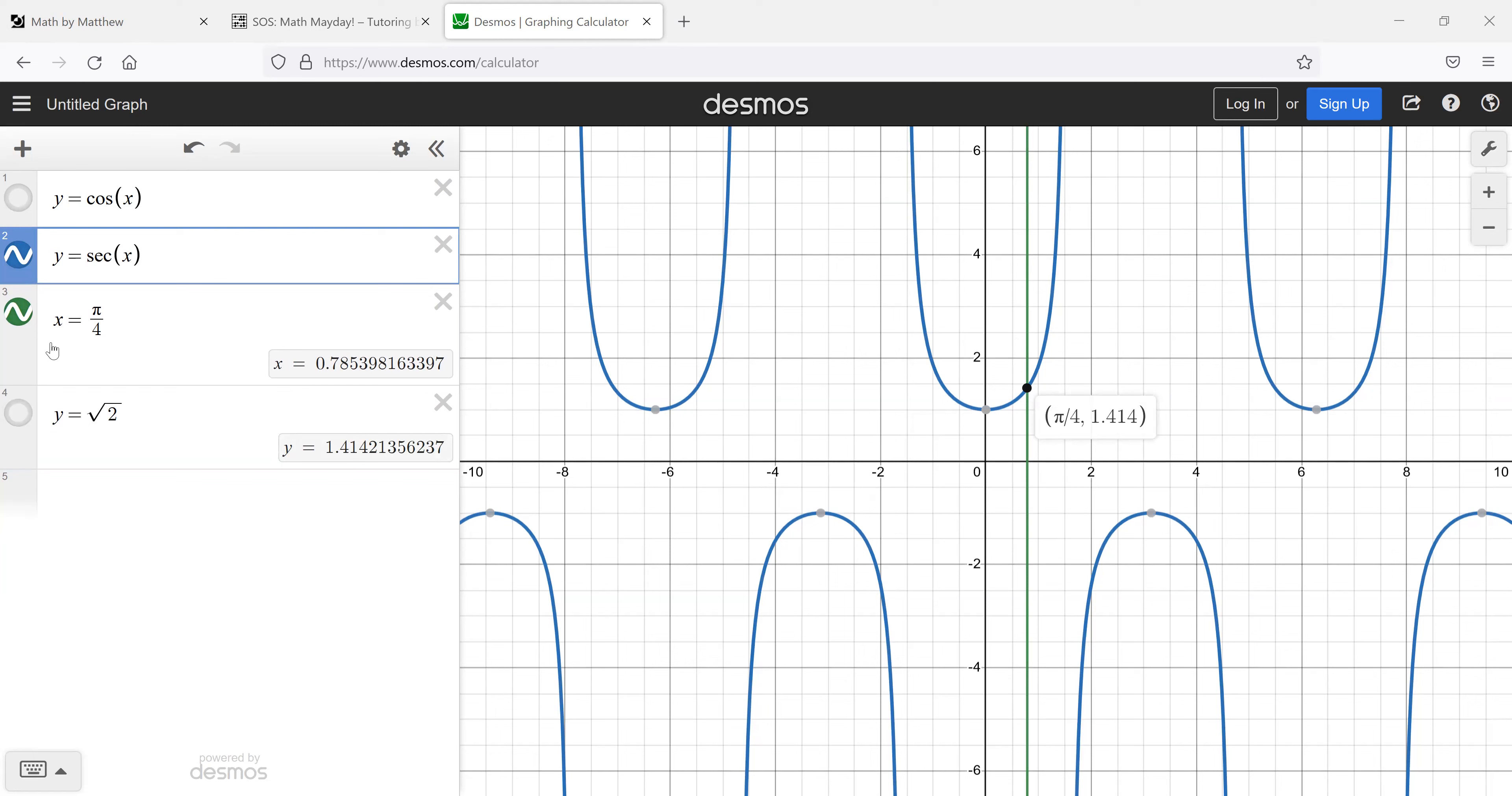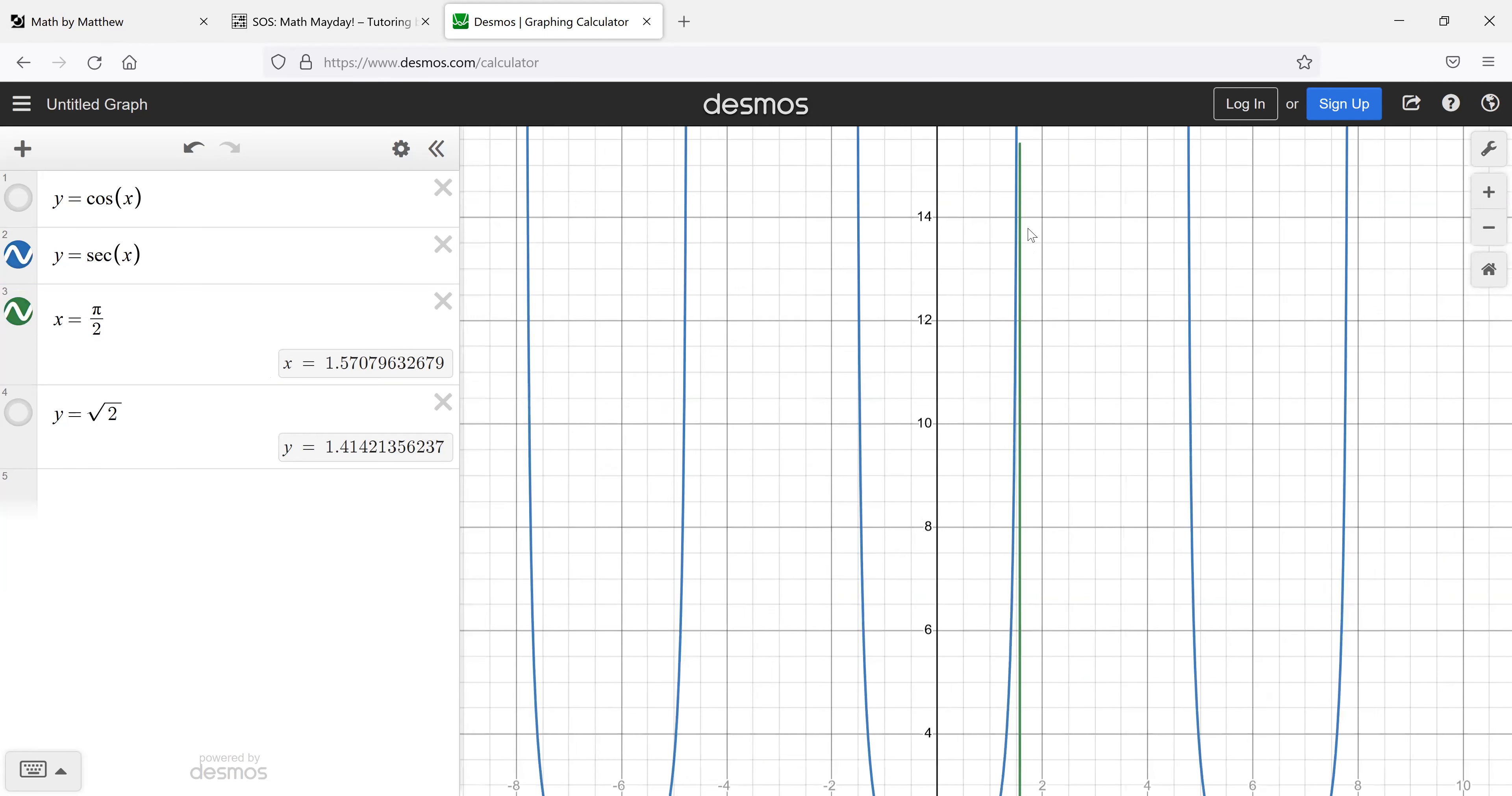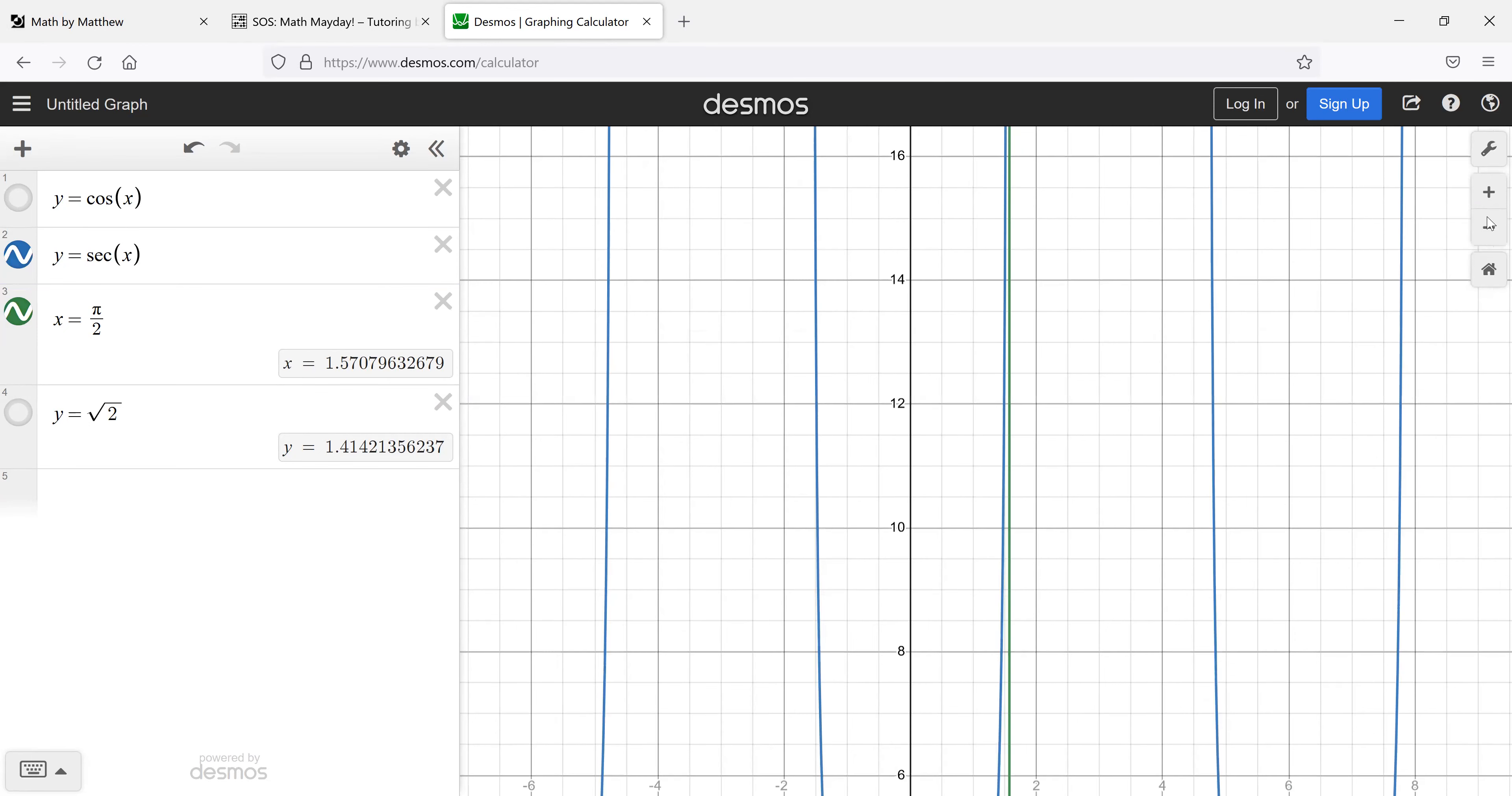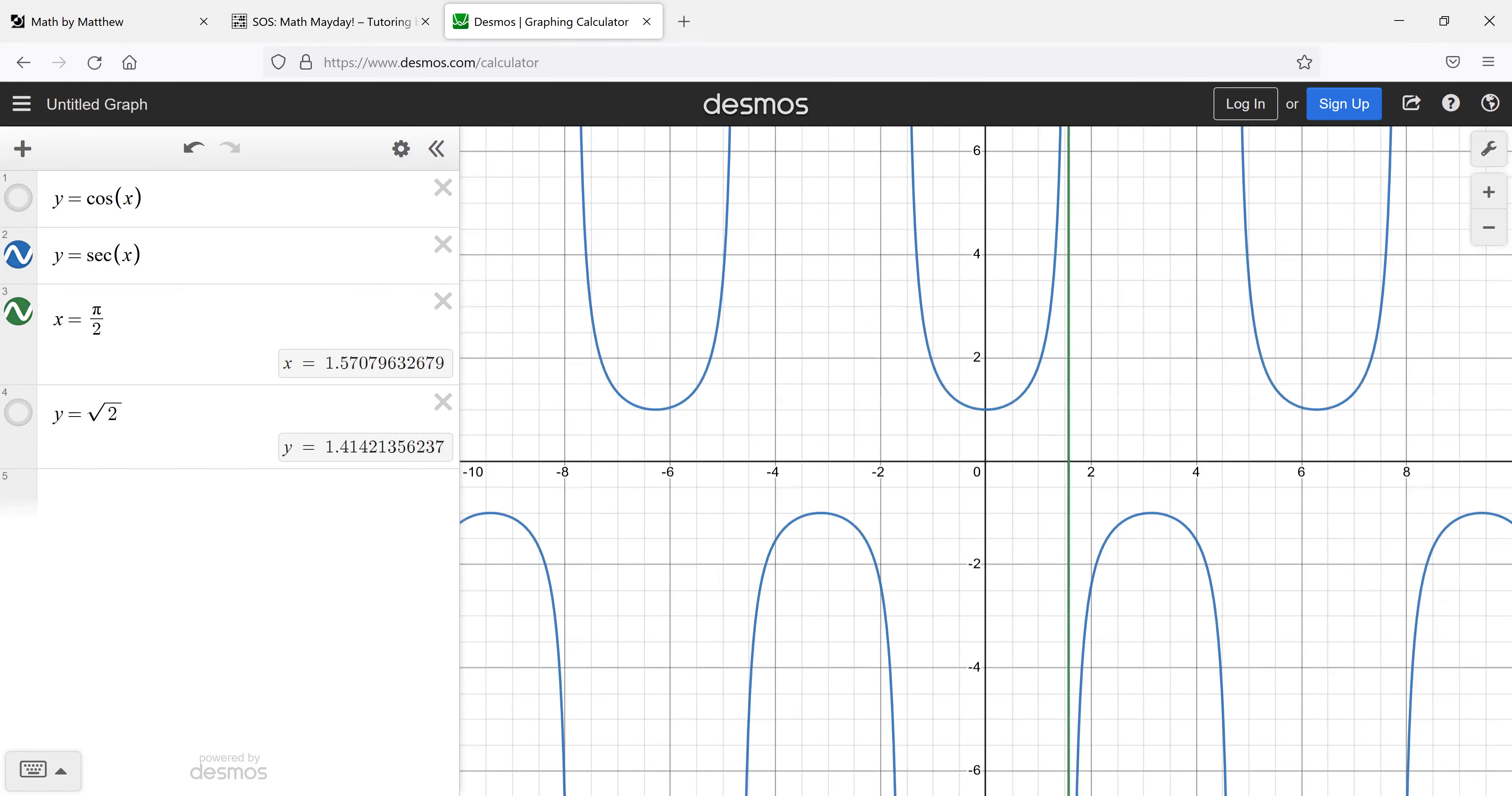But what's going on here at π over two? If we start zooming in, the blue looks like it approaches the green but never touches the green. So it does not exist. It does not exist. So you could say DNE, you can leave it empty.